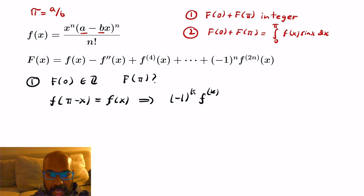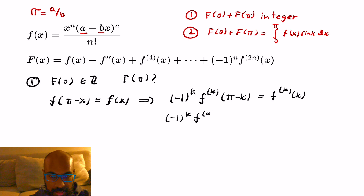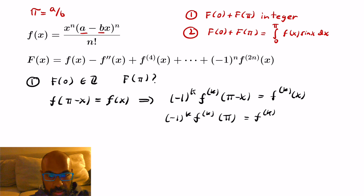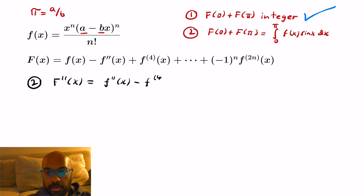What does that have to do with capital F? Taking the k-th derivative of each side using the chain rule gives that (-1)^k times the k-th derivative of f at (π - x) equals the k-th derivative of f at x. So the k-th derivative of little f evaluated at π mirrors the k-th derivative at zero. Therefore capital F at pi is an integer if capital F at zero is an integer — and it is. So capital F(0) + capital F(π) is indeed an integer.